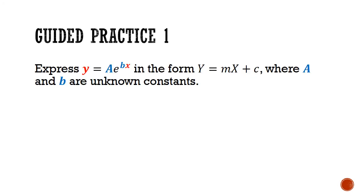In the first guided practice, we're going to learn how to transform a non-linear equation into its linear law equivalent. For this question, we want to express y equals to a times e to the power of bx in the form big Y equals to m big X plus c, where a and b are unknown constants. The big X and big Y need to be independent of the unknown constants a and b, while the gradient and big Y intercept m and c need to be independent of the variables x and y. Since b and x are stuck together as the exponent of e, we can free them up by taking the natural log on both sides.